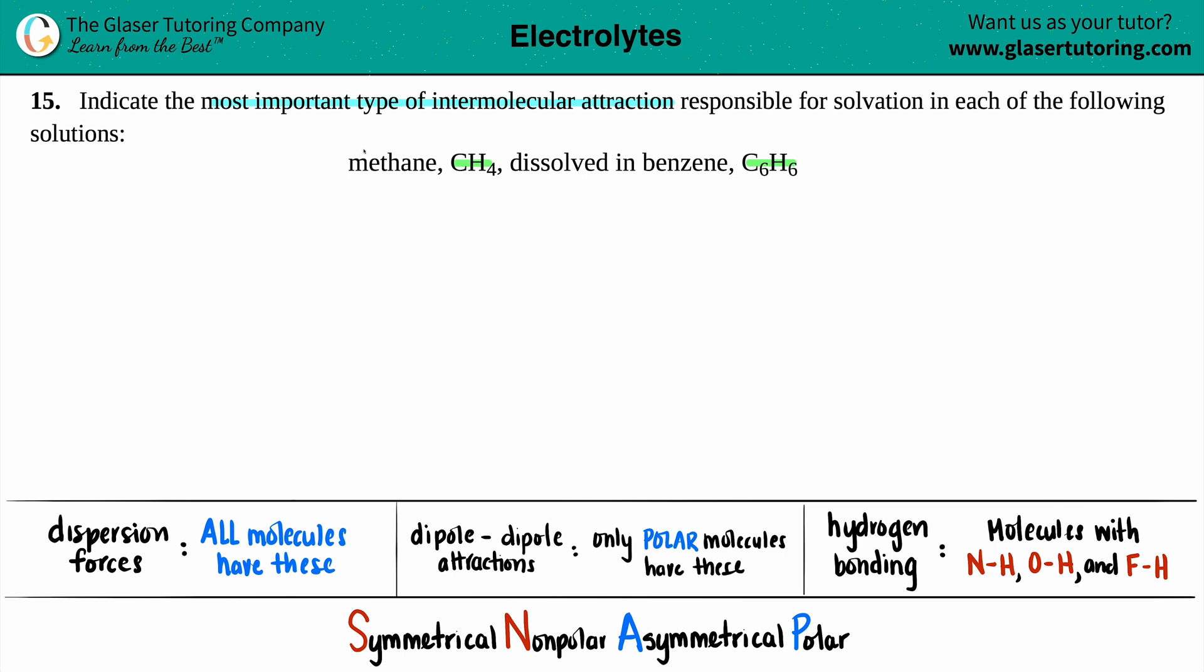So we have CH4 being dissolved in C6H6. Now we have to find out the most important type of intermolecular attraction that exists between these two molecules. I wrote down the intermolecular attractions seen throughout all covalent compounds: dispersion forces, dipole-dipole, and hydrogen bonding. The most important type of intermolecular force is always the strongest attraction that the molecules share in common.